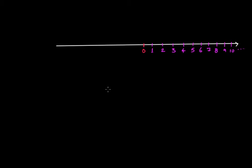If someone asks you to represent integers, you have to place negative integers as well, along with zero and positive integers on the number line. So what you will do is start to the left of zero and write minus one here. We put minus one to the left because integers include not only negative numbers but also zero and the positive numbers. We have already placed positive numbers and zero, so now we only have to place negative numbers on this number line.